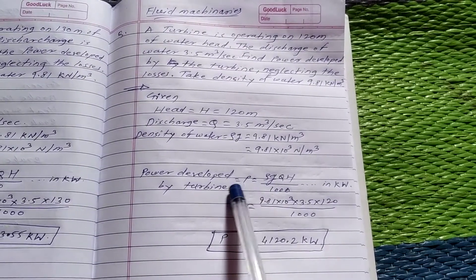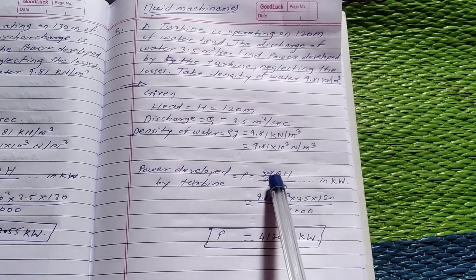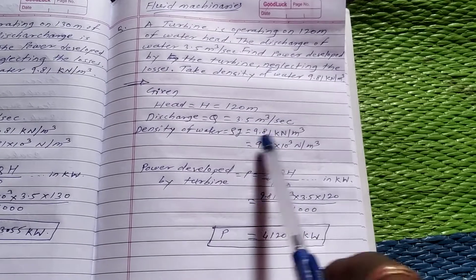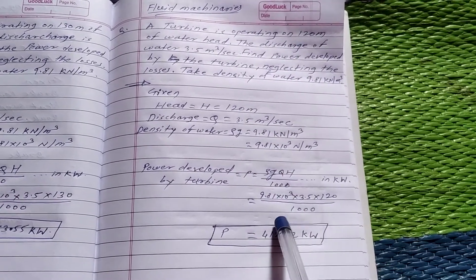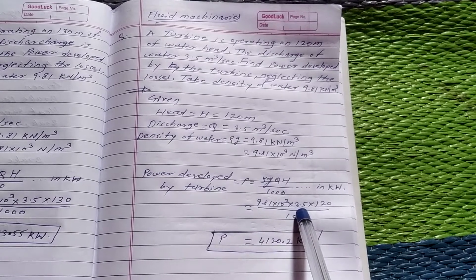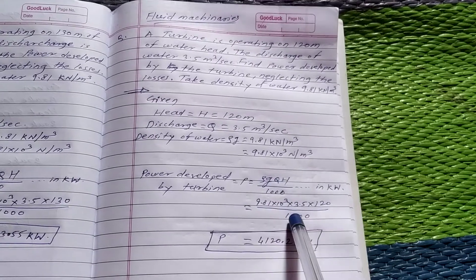In this problem, P = ρGQH divided by 1000. We put in the values: ρG = 9.81 × 10³, Q = 3.5, and H = 120 meter divided by 1000.